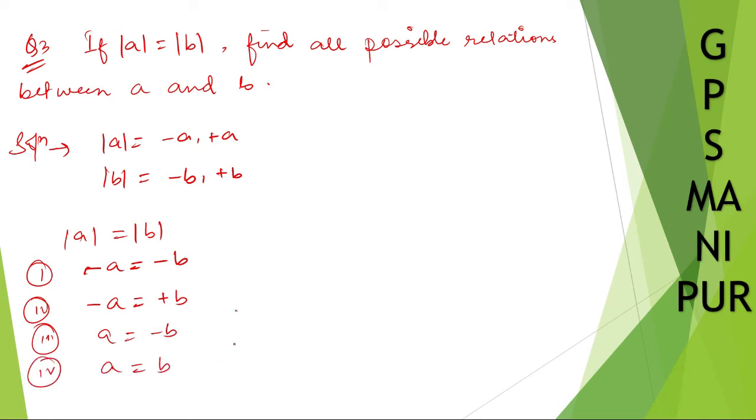There are four possible relations, but these are not actually four even. So, there are four possible relations. But, this one minus, minus cancels. Minus A is equal to plus B or A is equal to minus B, these two.